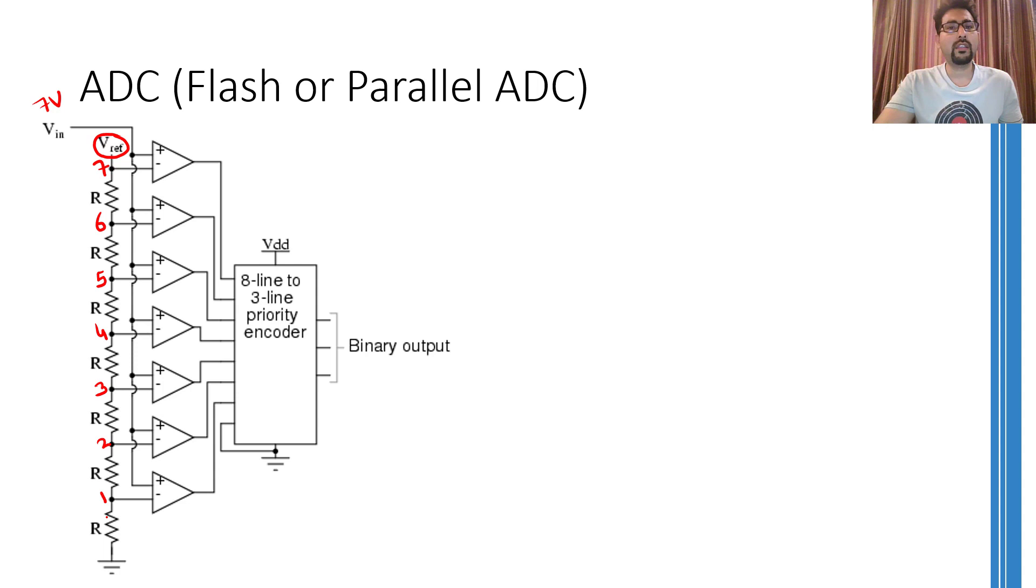These voltages will be applied at the inverting terminal of the operational amplifier, whereas the non-inverting terminals of the operational amplifier, the input voltage will be applied. You can easily see that if the input voltage is larger than, for example, 6, then these comparators will give a positive saturation value.